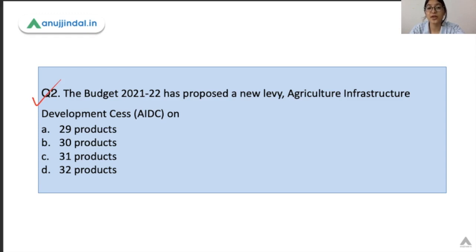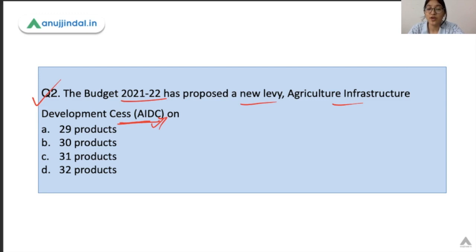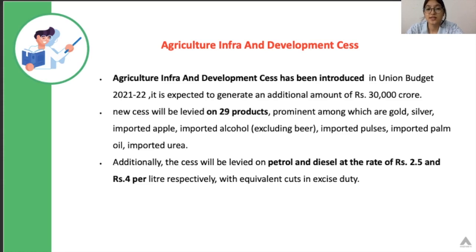Moving to the next question: Budget 2021-22 has proposed a new levy — the Agriculture Infrastructure Development Cess. You need to identify on how many products this Cess would be levied. The correct answer is A — 29 products. This Cess has been recently proposed by the government in this budget and it is expected to generate an amount of Rs. 30,000 crore.